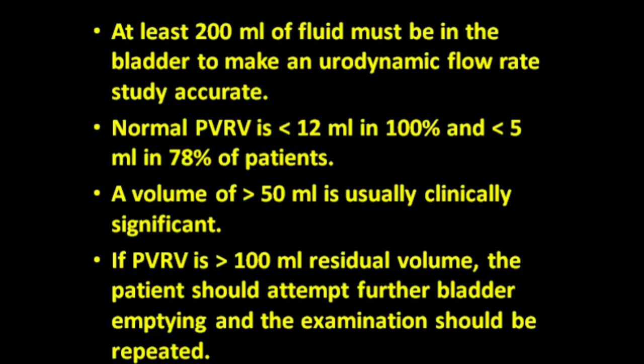At least 200 ml of fluid or urine must be in the bladder to make the urodynamic flow rate steady and accurate. Normal post-void residual volume is less than 12 cc in almost 100% of patients, while it is less than 5 cc in almost 78% of patients. If the post-void residual volume is more than 50 cc, it is considered clinically significant.